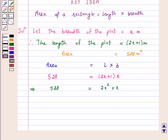We can rewrite this as 2x square plus x minus 528 is equal to 0.